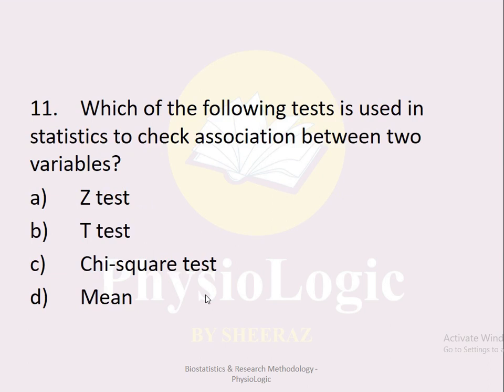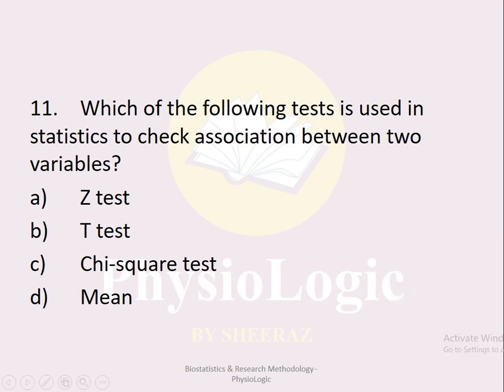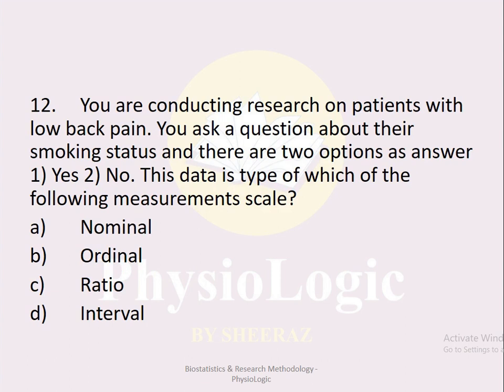MCQ number eleven: Which of the following tests is used in statistics to check association between two variables? Option a z-test, option b t-test, option c chi-square test, option d mean. The correct option is option c, chi-square test. Chi-square is a non-parametric test used to check association between two variables.